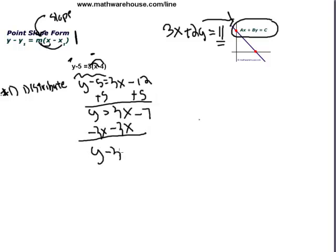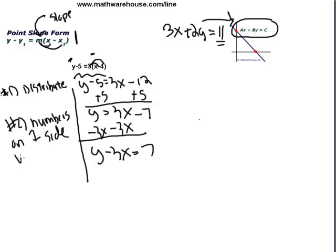So you have y minus 3x equals 7. So step one was to distribute the slope, and step two was to get the numbers on one side, variables on the other.